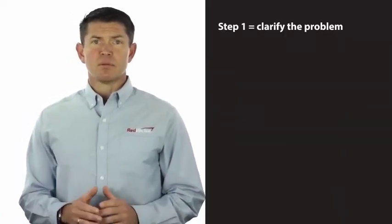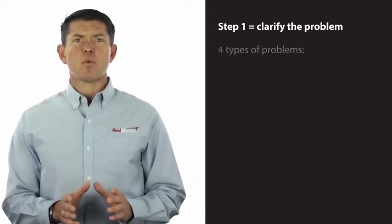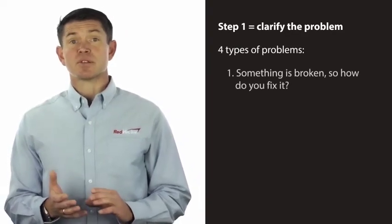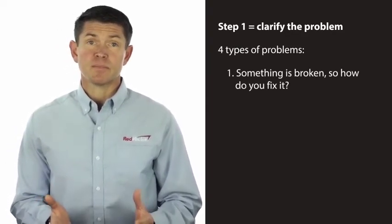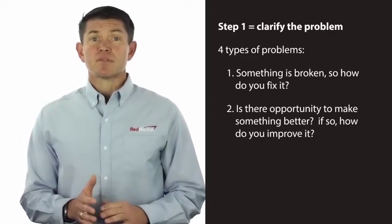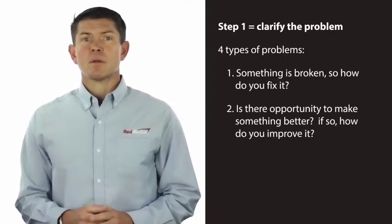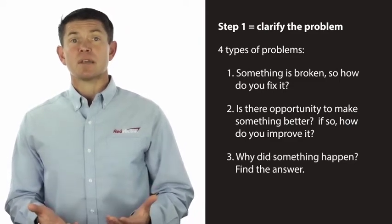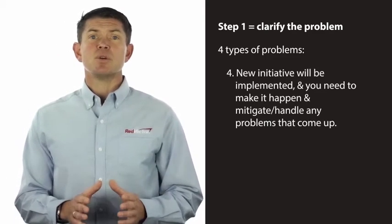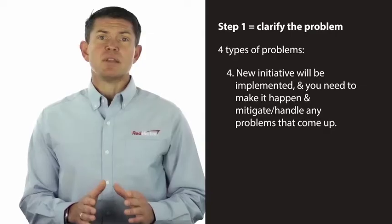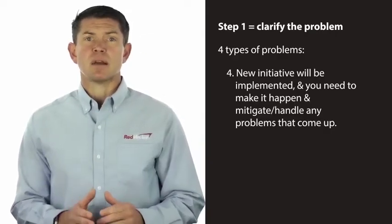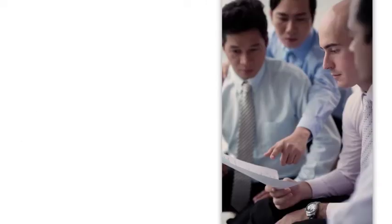The eight-step process looks like this. In step one, you clarify the problem. In general, we're faced with four types of problems. Something is broken - how do you fix it? Is there opportunity to make something better? If so, how do you improve it? Why did something happen? Find the answer. A new initiative will be implemented and you need to make it happen and mitigate or handle any problems that come up. It's critical to get this step right. You don't want to invest time and energy solving the wrong problem.